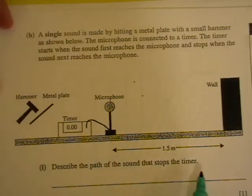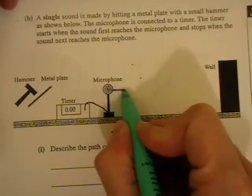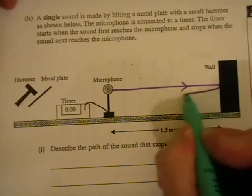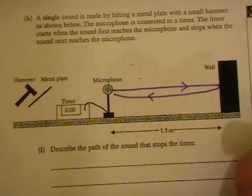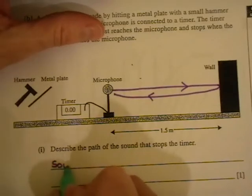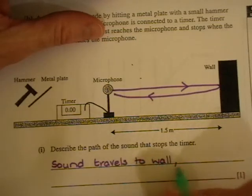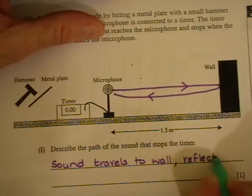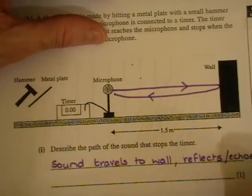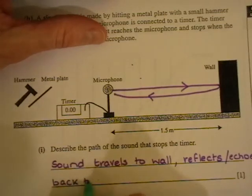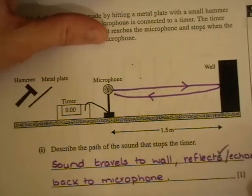Describe the path of sound that stops the timer. So you know that the sound is going to travel to the microphone and that starts it. And then the sound is going to travel to the wall, be reflected from the wall as an echo, and back to the microphone. And that's the path of the sound. So to describe that you'll say that the sound travels to the wall and travels back, or echoes, reflects or echoes, back to the microphone. Now really what the examiners are looking for are that reflecting or echoing idea.